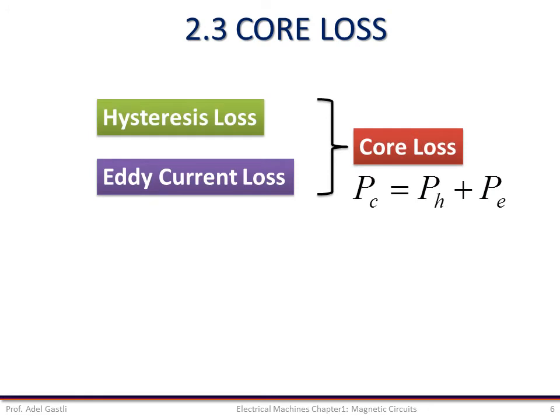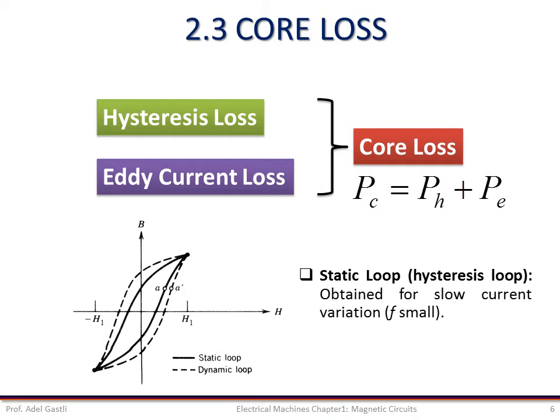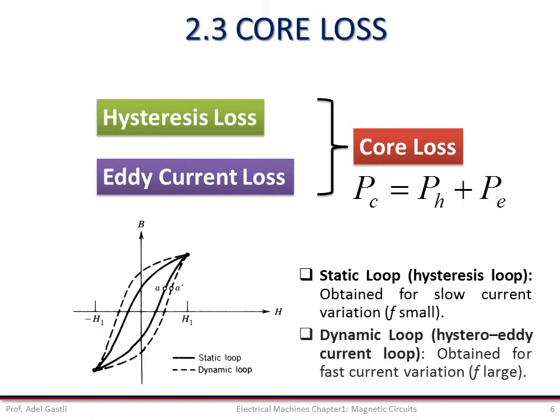The hysteresis loss and the eddy current loss together form what is called the core loss. Among hysteresis loops, we distinguish two types: the static loop and the dynamic loop. The static loop, shown here with a continuous line, is usually obtained for slow current variation with small frequencies. The dynamic loop, called the hysteresis eddy current loop, shown here with a dashed line, is obtained for fast current variation with large frequency f. These two types of loops will be further explained in the next slide.